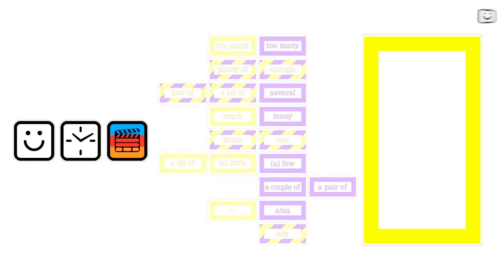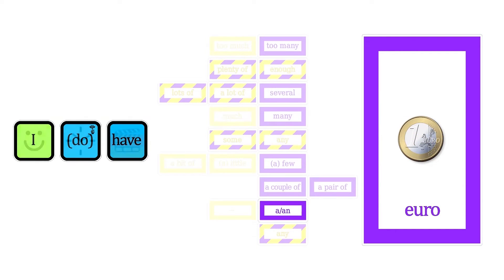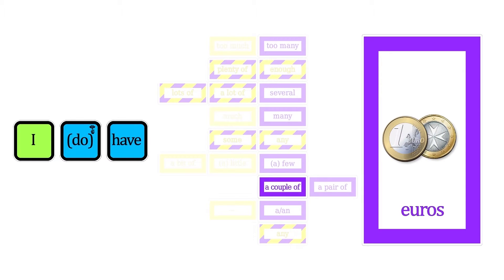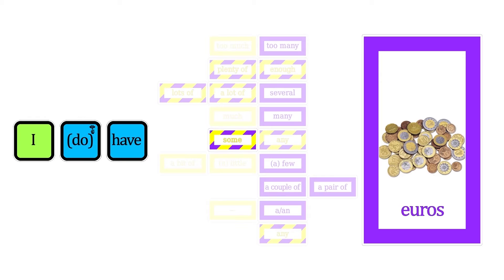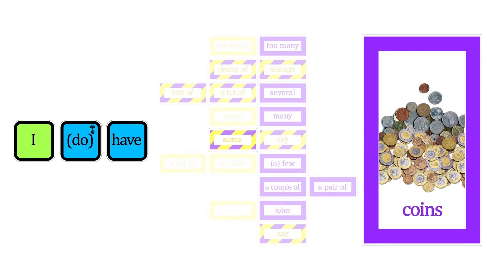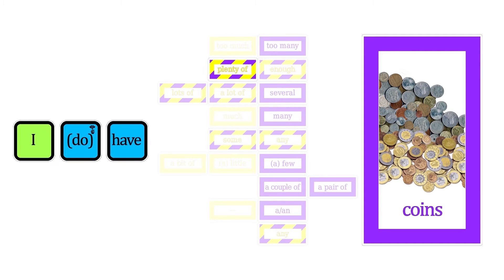Alright, let's get started. I'll start with euros. I don't have any euros. I have a euro. I have a couple of euros, or I have a pair of euros. I have a few euros. I have some euros. I'm going to use coins instead, and it's also countable. I have many coins. I have several coins, or I have a lot of coins, or I have lots of coins. I have enough coins. I have plenty of coins. I have too many coins.